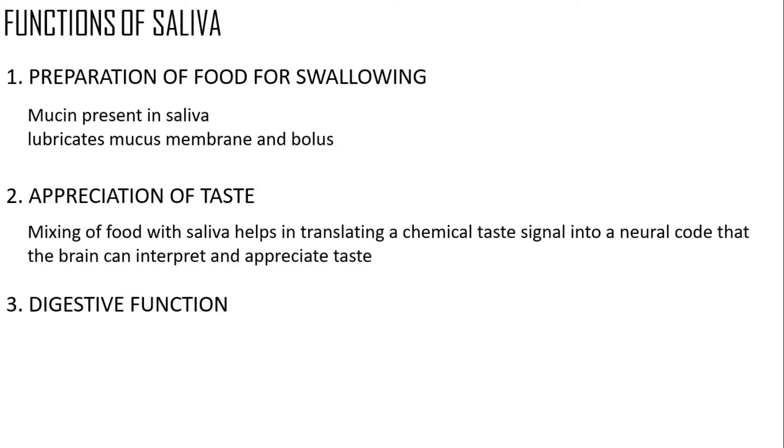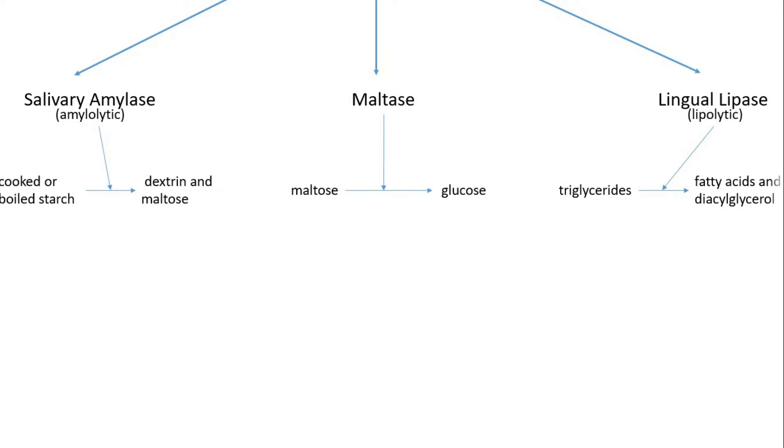Digestive function of saliva: Saliva has three enzymes - salivary amylase, maltase, and lingual lipase. Salivary amylase is amylolytic; that is, it digests carbohydrates. It converts starch into dextrin and maltose. It's secreted by all the glands. Next is maltase, that converts maltose into glucose. It's only secreted by the major salivary glands. The lingual lipase is lipolytic, that is, lipid digesting. It converts triglycerides into fatty acids and diacylglycerols. It's secreted by the lingual glands.